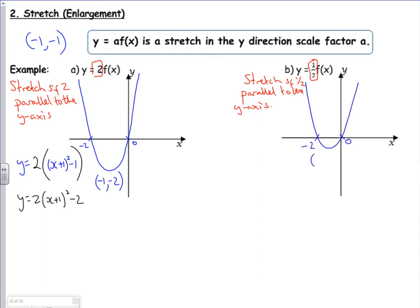Instead of the vertex of minus 1, minus 1, because it's half as far away from the x-axis, it's minus 1, minus a half. For the equation of the curve, it's now a half lots of x add 1 squared minus 1. So it would be y equals 1 half x add 1 squared minus 1 half. And that fits as well with your vertex.